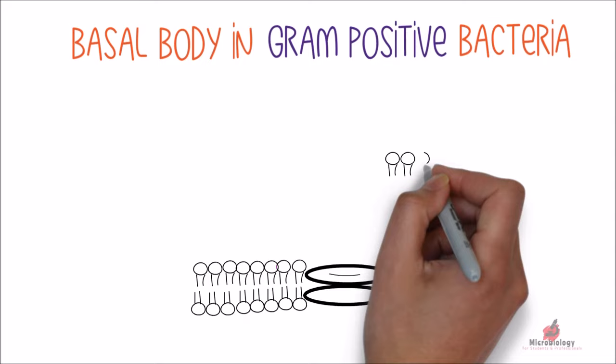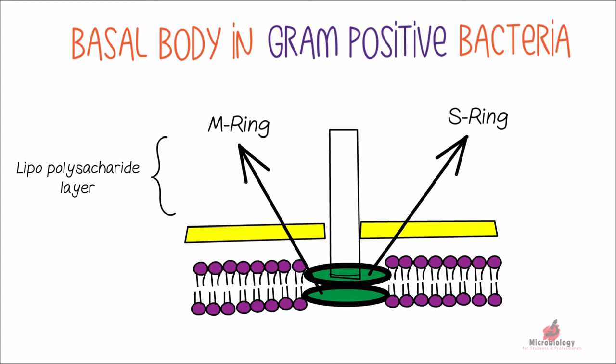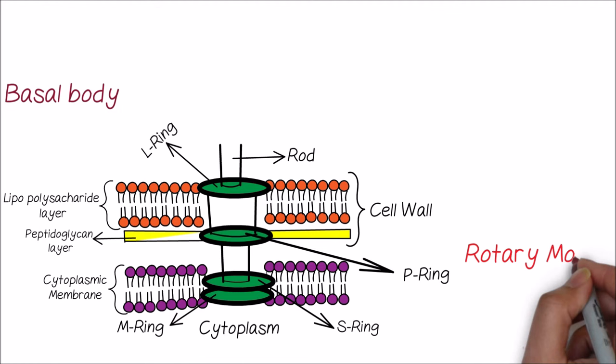In the gram-positive bacteria, as the outer lipopolysaccharide layer is almost not present, only the inner S and M ring can be found in the cytoplasmic membrane. The L and P ring are absent in the gram-positive bacteria. The basal body acts as a rotary motor and enables the flagellum to move.